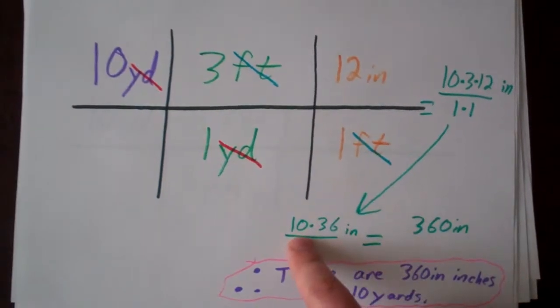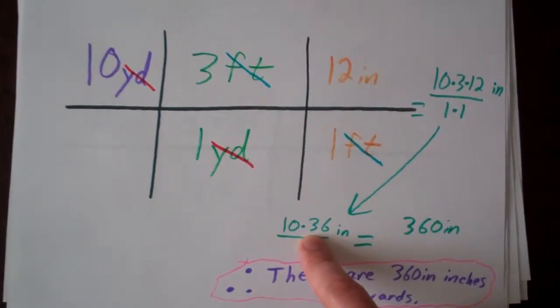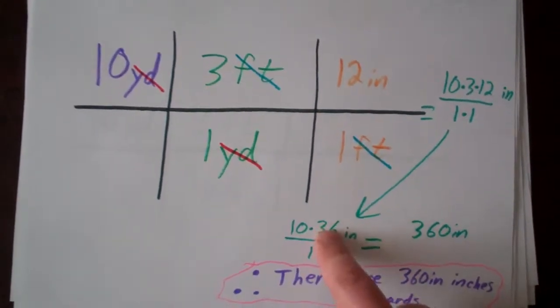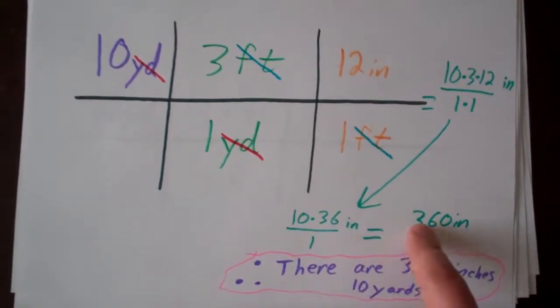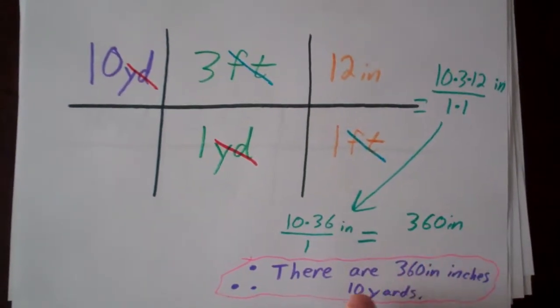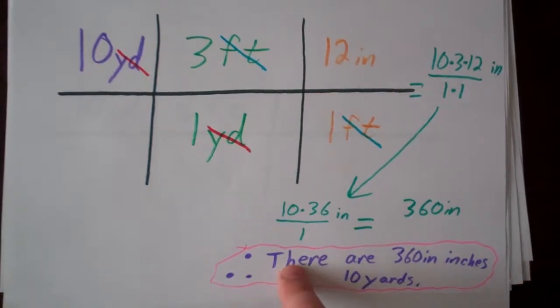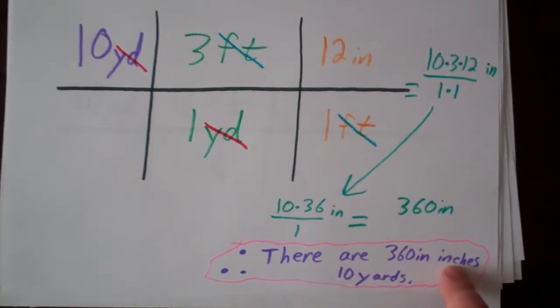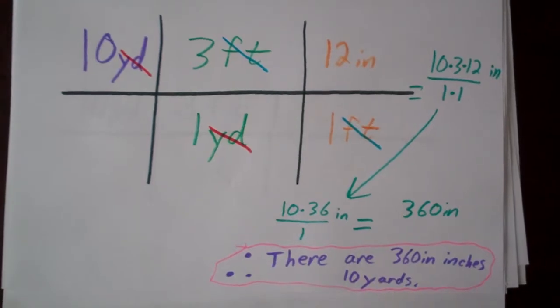Then we have 10 times 36 (we did 3 times 12 first) divided by 1, so we have 360 inches. And we can say as a concluding statement: therefore, there are 360 inches in 10 yards.